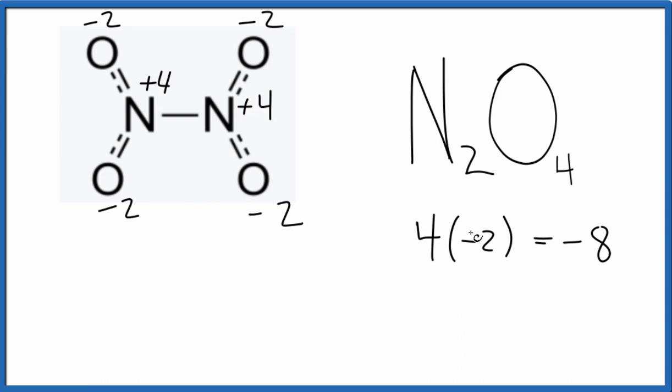So minus eight plus eight gives us that zero. Neutral molecule, the oxidation number on each nitrogen is plus four.